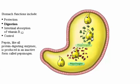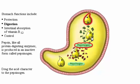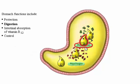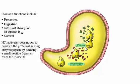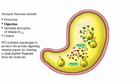Pepsin, like all protein-digesting enzymes, is produced in an inactive form called pepsinogen. If chief cells produced the active enzyme, they would self-digest. Hydrochloric acid activates pepsinogen to produce the protein-digesting enzyme pepsin by cleaving a small peptide fragment from the molecule.